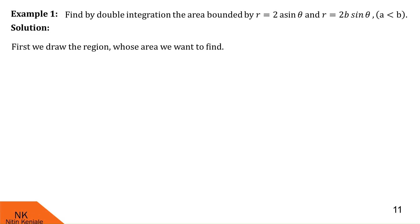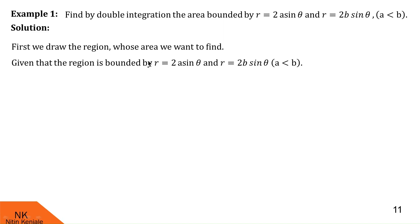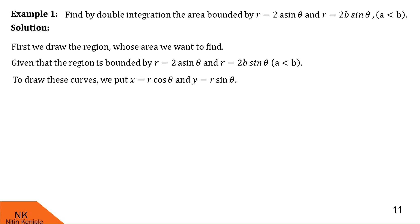First of all, we will draw the region whose area we want to find out. The given region is bounded by r = 2a sinθ and r = 2b sinθ. To draw these curves, we first convert them from polar to Cartesian coordinates by substituting x = r cosθ and y = r sinθ. Therefore, we know x² + y² = r².